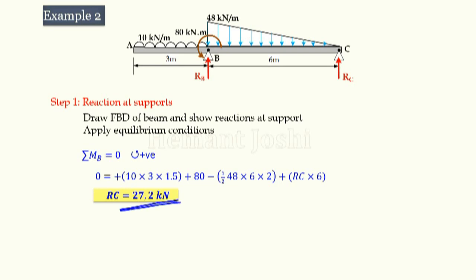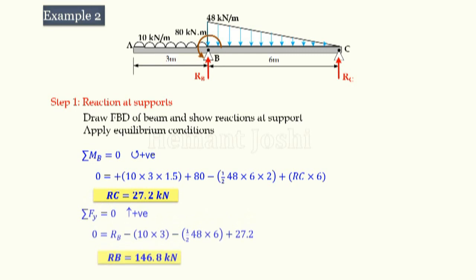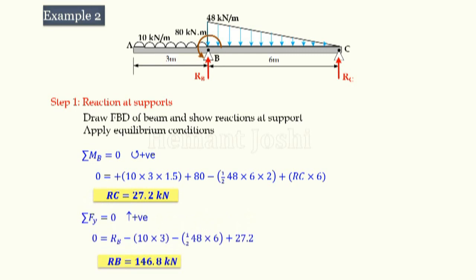Solving that equation, we get reaction at C equal to +27.2 kN. A positive answer means the assumed upward arrow is correct. Next, applying ΣFy = 0, we get reaction at B equal to +146.8 kN. Again, positive means the assumed upward sense of RB is correct.